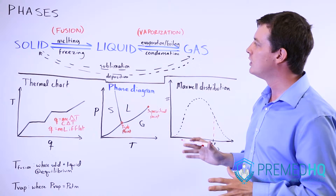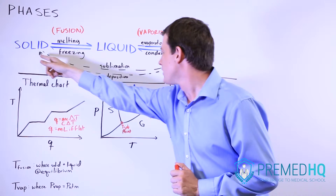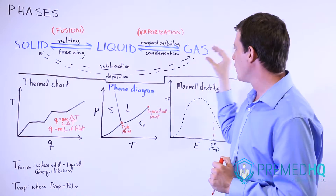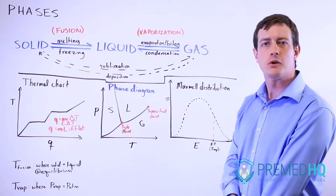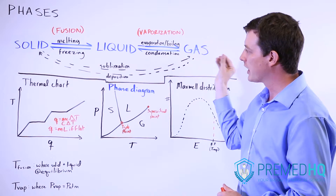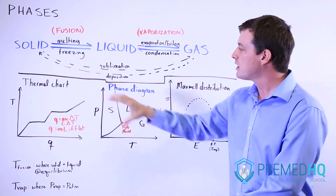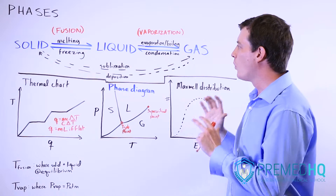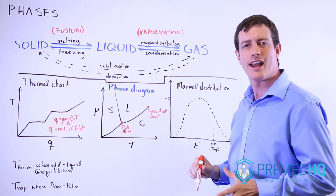You also have two more unusual ones: moving from a solid to a gas, which is referred to as sublimation, or going straight from the gas phase into the solid phase, which is known as deposition. As we go through these various charts, we'll explain where sublimation and deposition can occur and where they can't.